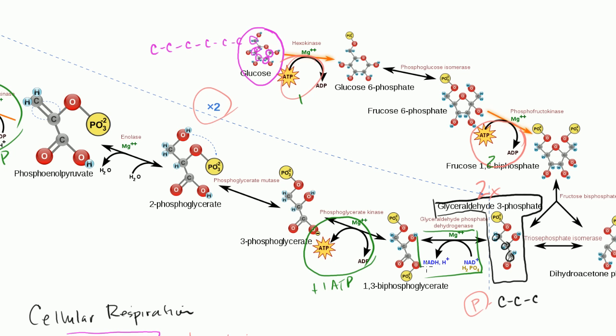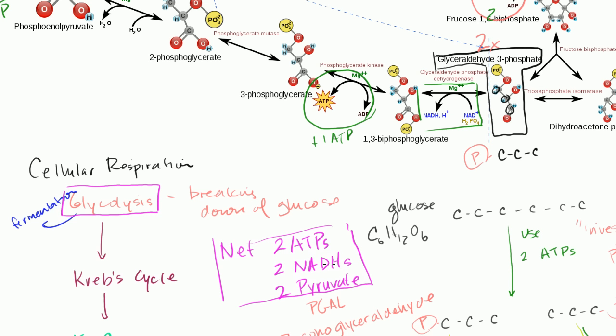So this happens once for each of these compounds. And obviously there are two of these. Glucose got split into two of these guys. So two NADHs are going to be produced. And later these are going to be used in the electron transport chain to actually each produce three ATPs.